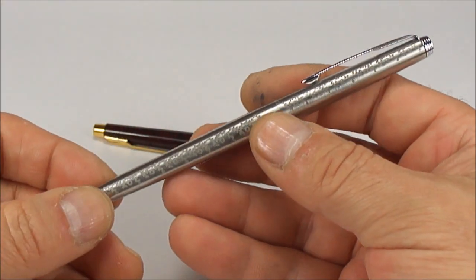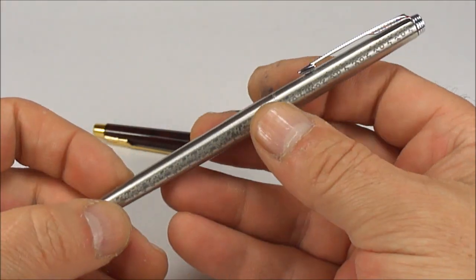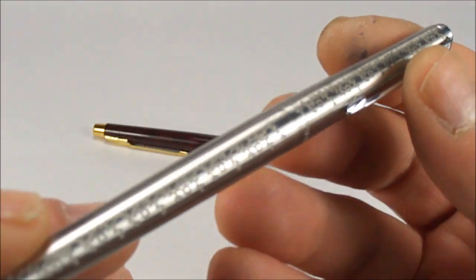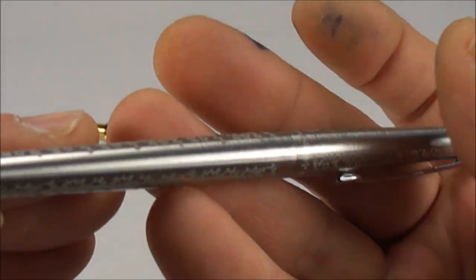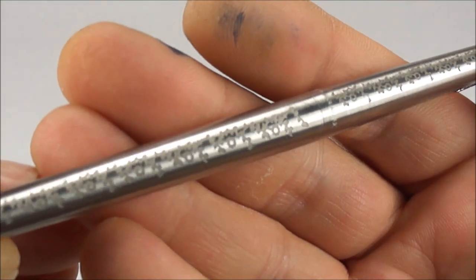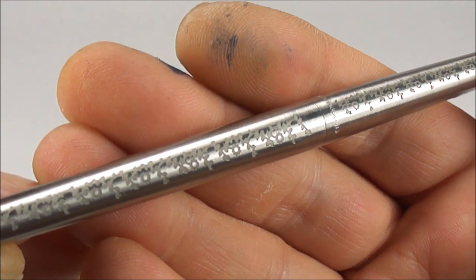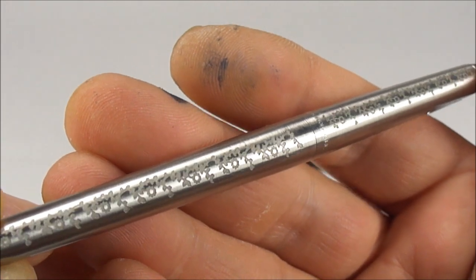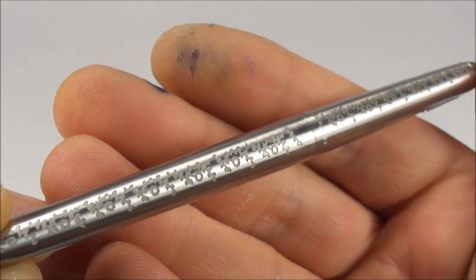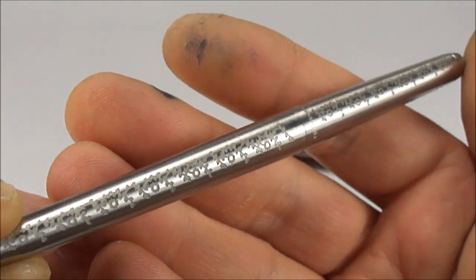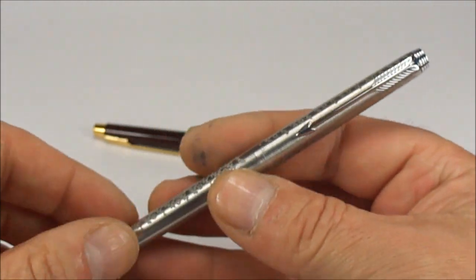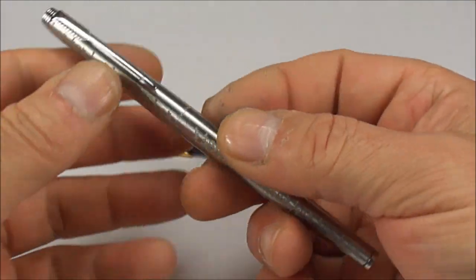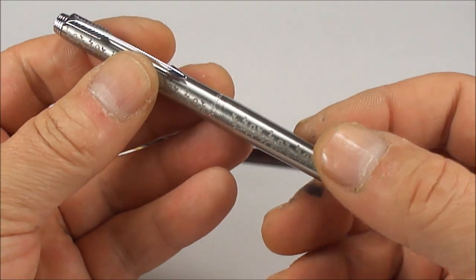These pens came as cartridge converters. This particular one has a lovely floral etched pattern. I'm not sure what Parker actually called this pattern, so if anybody knows, leave a comment. It's a lovely pattern overall.